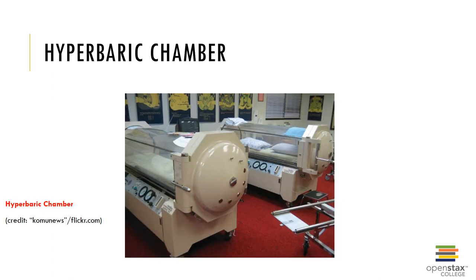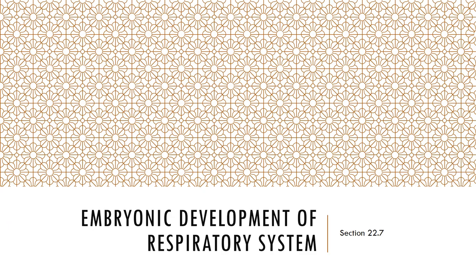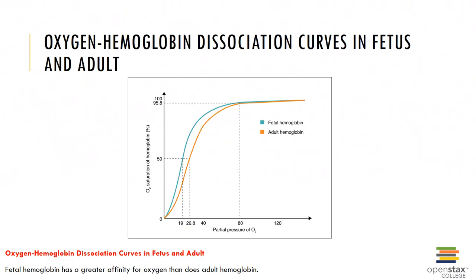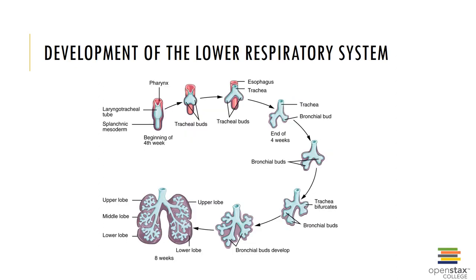Here we can see a hyperbaric chamber, which may be needed in certain instances where the respiratory system or the level of oxygen or CO2 has been compromised in the blood. Here is the oxygen-hemoglobin dissociation curve in both the fetus and the adult; fetal hemoglobin has a much greater affinity for oxygen than does adult hemoglobin. Here we can also see the development of the lower respiratory system during fetal development, going from the beginning of the fourth week all the way into eight weeks where some of the lobes of the lungs have begun to emerge.